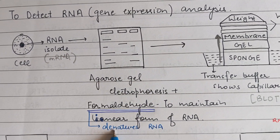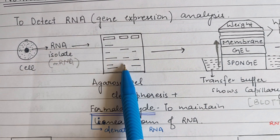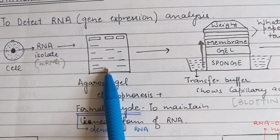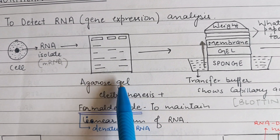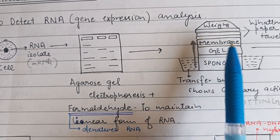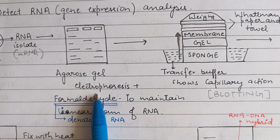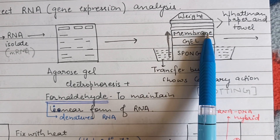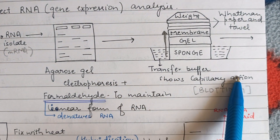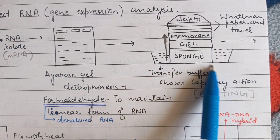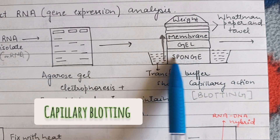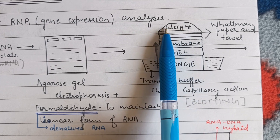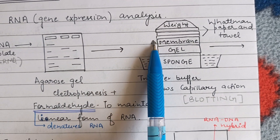We now transfer this gel onto a membrane. Transferring all these RNA bands — which are already denatured — from the agarose gel to a nylon membrane is called blotting. The blotting process transfers the bands from the gel onto the nylon membrane using capillary action. The setup consists of a transfer buffer solution with a sponge, then the gel, then the membrane, and then Whatman paper and a weight on top.